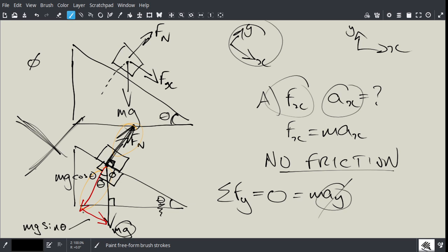And in fact this one here, the mg sine theta one, is along, I can move this vector to be acting on the mass. It doesn't have to be acting way down here. All of these are acting on the mass.